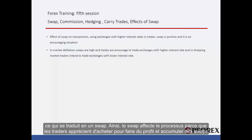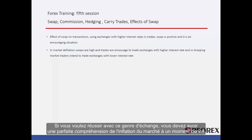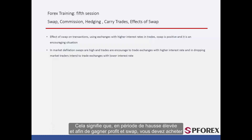Therefore, swap affects the process, because traders like to buy so they can gain profit and collect swaps. Parties usually draw their attention towards trades in which they make profit and collect swaps at the same time. If you want to make the right move with this type of exchange, you must have a perfect understanding of market inflation at the time. This means at the time of high inflation, in order to gain profit and swap, you should buy, and when experiencing a flat market or market downturn, you should intend to sell.